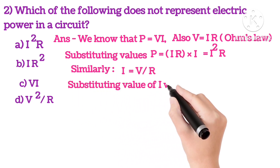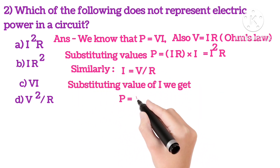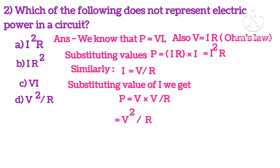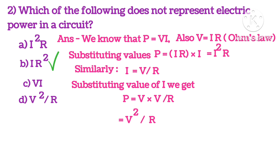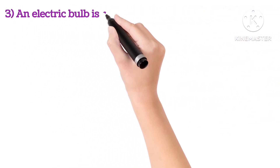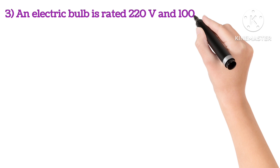Similarly, I is equals to V I, substituting the values, we get P equals V squared upon R. So the answer left is I R squared. This does not represent electric power.